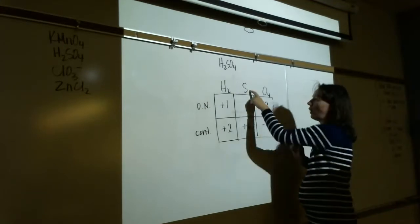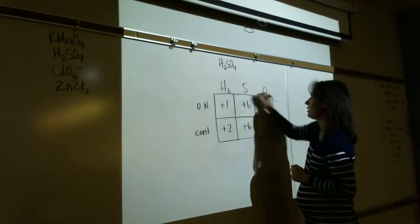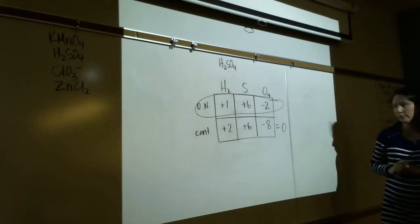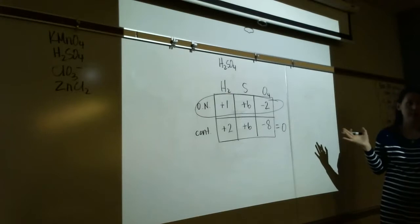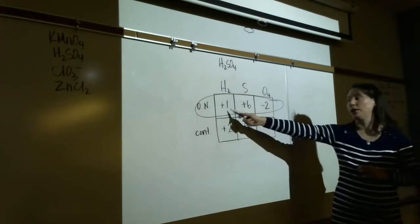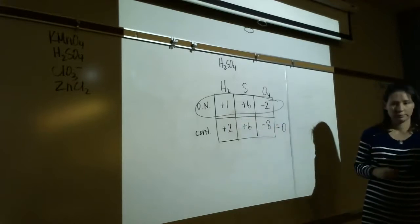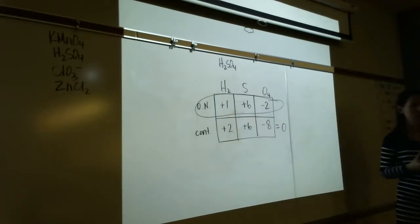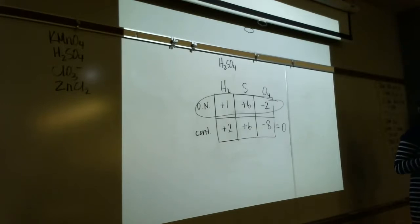ZnCl2 — zinc chloride — is neutral, so contributions add up to zero. Zinc is in the d-block transition metals — no rules. With no rules for zinc, we're forced to use the usually rule for chlorine. Group 7 is usually -1; two chlorines contribute -2. So zinc must be +2. Oxidation numbers: Zn=+2, Cl=-1. Remember, the contributions add up to zero but the oxidation numbers themselves will not.